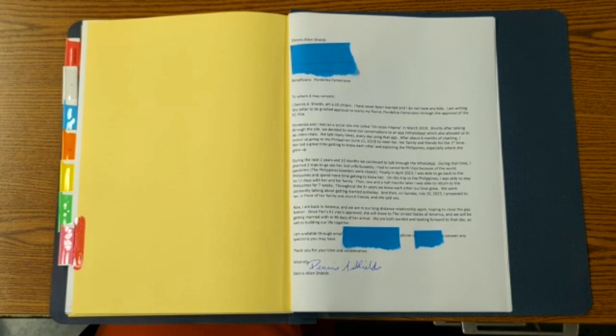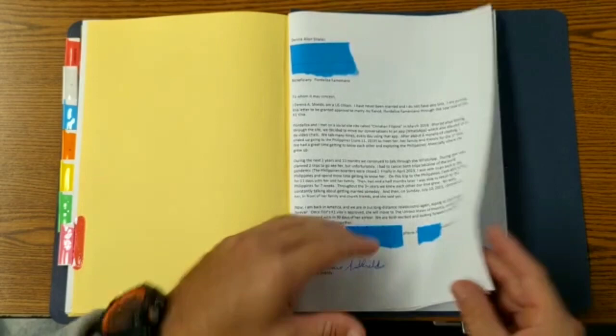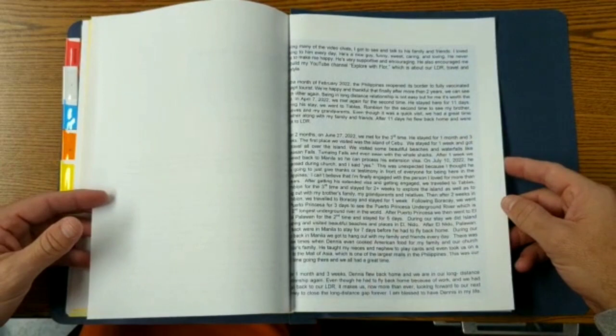Now, I'm back in America. We are in our long-distance relationship again, hoping to close the gap forever. Once Floor's K-1 visa is approved, she will move to the United States and will be able to get married within the 90 days of her arrival. We are both excited and looking forward to that day, as well as building our life together. I'm available through email, I have my phone number to answer any questions that you might have. Thank you for your time and consideration. So, like I said, that was mine. Floor's has a lot more detailed information about our ongoing relationship, as you can tell.